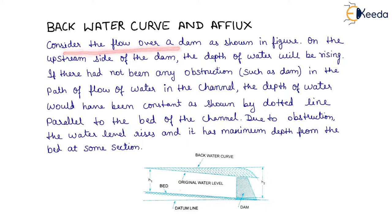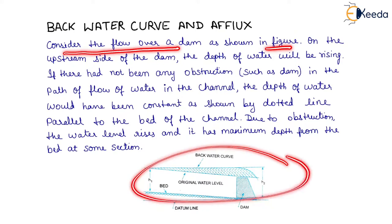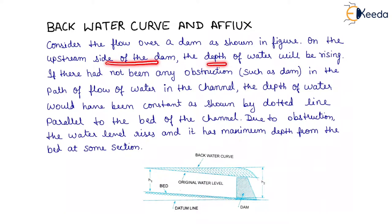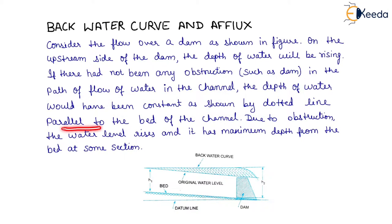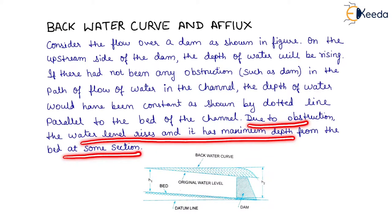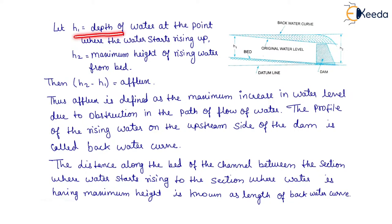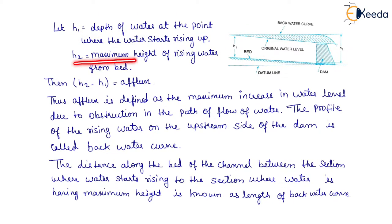Consider the flow over a dam as shown in the figure. On the upstream side of the dam, the depth of water will be rising. If there had not been any obstruction such as a dam in the path of flow of water in the channel, the depth of water would have been constant, as shown by the dotted line parallel to the bed of the channel. Due to the obstruction, the water level rises and it has maximum depth from the bed at some section. Let H1 be the depth of water at the point where the water starts rising up, as shown here.